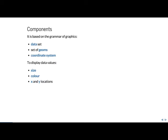The components of ggplot2 are based on the grammar of graphics — the idea that every graph can be built from the same types of components: a dataset, a set of geoms, which are visual marks that represent data points, and a set of coordinate systems. To display data values, you can specify the size of your points, coloring, x and y locations, your legends, and the different categories of your data. We'll go through the uses of these components by example, building them up one by one based on bar plots, line plots, and so on. Once you understand what each component does, you can easily create any type of graph you want with simple commands.